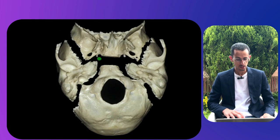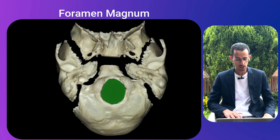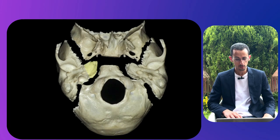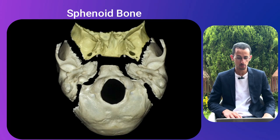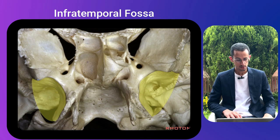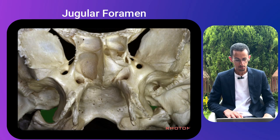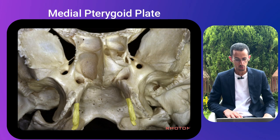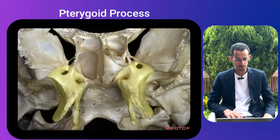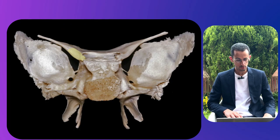The next picture dissects the different skull bones: the foramen lacerum in green, the foramen magnum, the occipital bone, the petroclival fissure where the inferior petrosal sinus runs along the petrous apex, the pterygoid process, the sphenoid bone, and the temporal bone. A closer look shows the clivus, foramen rotundum, the infratemporal fossa, the jugular foramen, the medial pterygoid plate, the occipital condyle, the petrous temporal bone, the pterygoid process, and the Vidian canal.